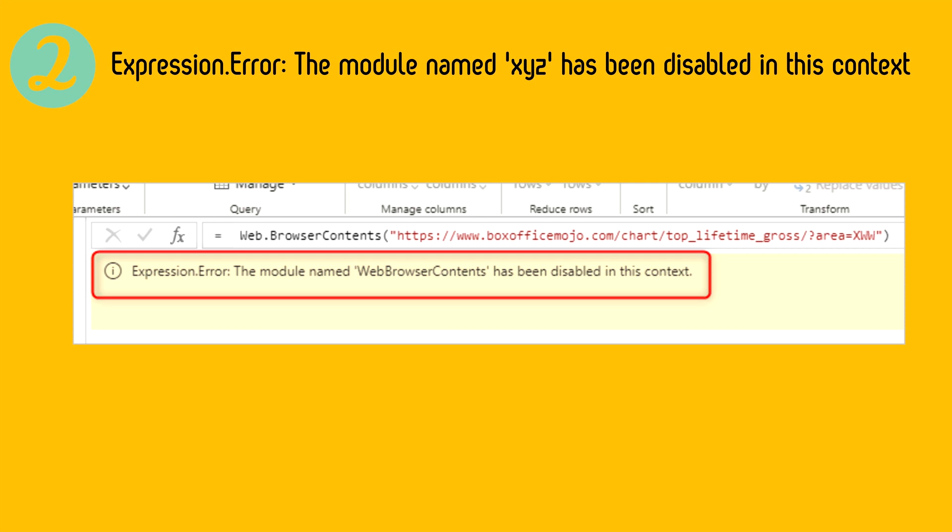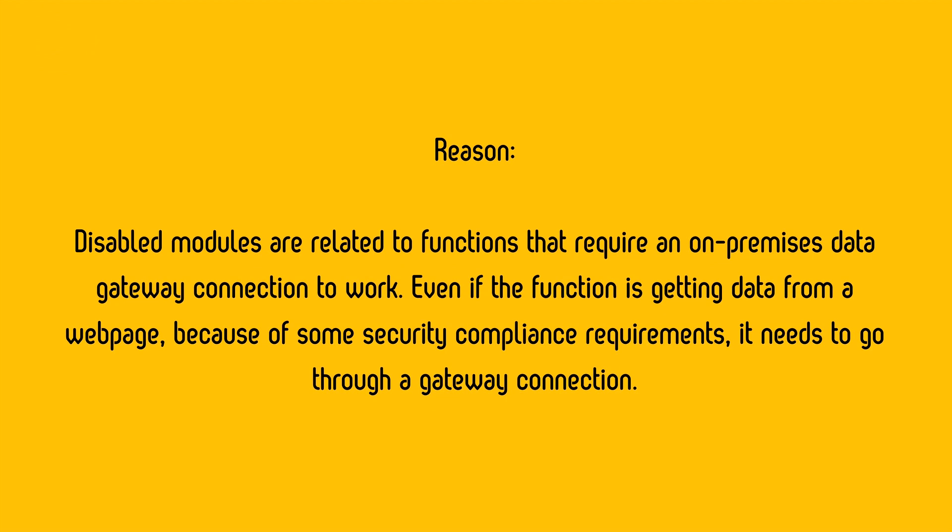Another error: 'The module name XYZ has been disabled in this context.' When you migrate queries from Power Query in desktop tools to a data flow, you may get an error saying the module is disabled. One example is when your query uses functions such as Web.Page or Web.BrowserContents. Disabled modules are related to functions that require an on-premises data gateway connection to work, even if the function is getting data from a web page — due to security and compliance requirements it must go through a gateway.